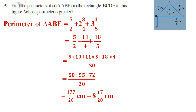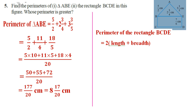What is the formula to find the perimeter of a rectangle? The perimeter of rectangle BCDE is equal to 2 × (length + breadth). Here, the length is 2 3/4 centimeter and the breadth is 7/6 centimeter. Now substitute these values: 2 × (2 3/4 + 7/6).